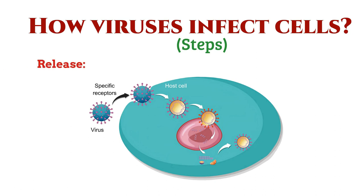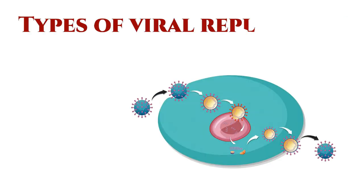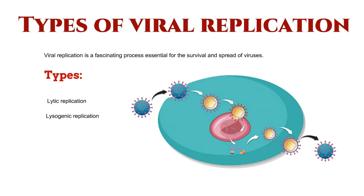The last step is release: once assembled, the newly formed viruses are released from the host cell to infect other cells, continuing the infection cycle. Viral replication is a fascinating process essential for the survival and spread of viruses. It can be broadly categorized into two main strategies: lytic replication and lysogenic replication.